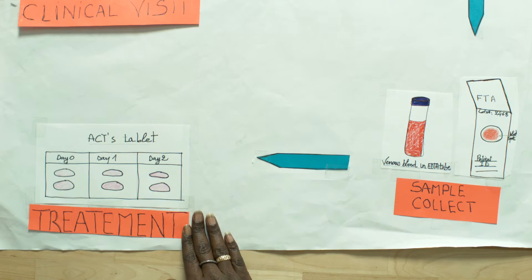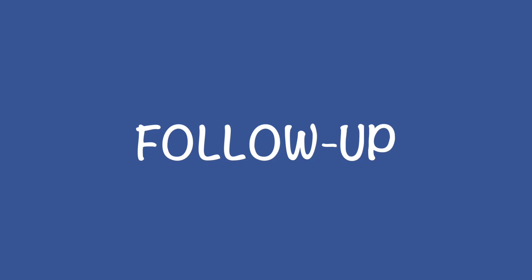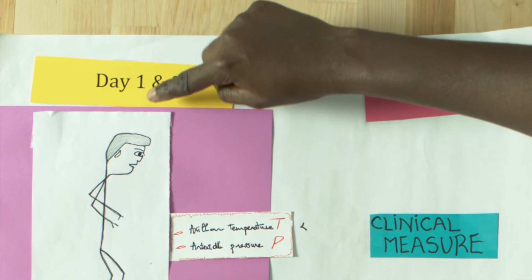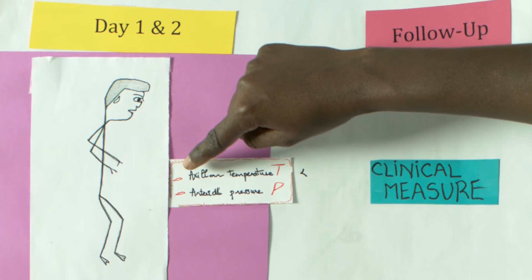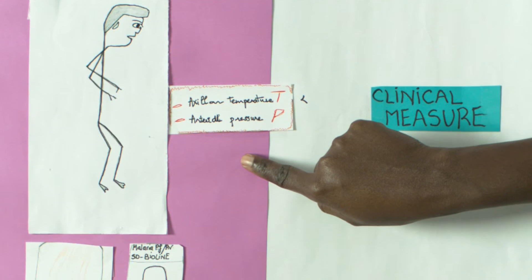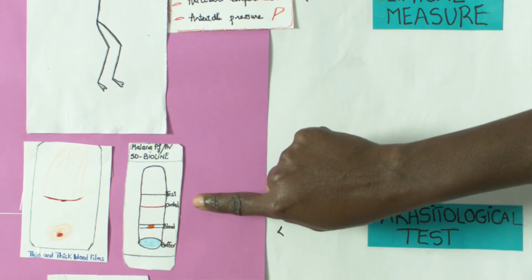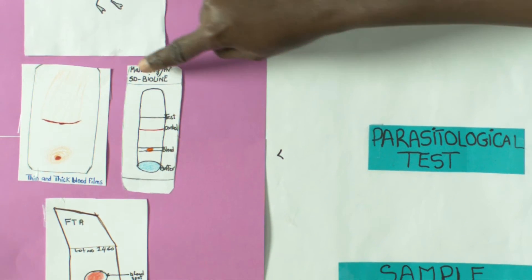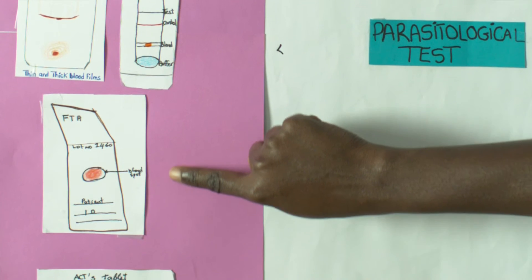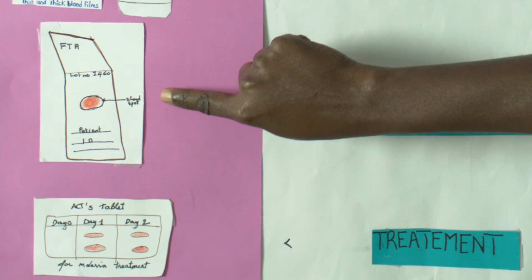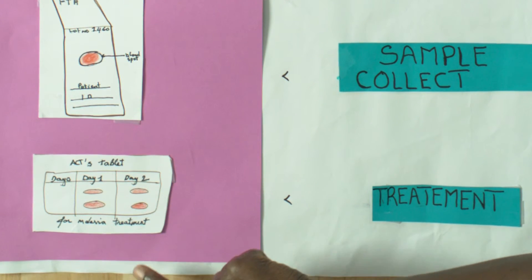If the patient agrees to participate in the study, we collect a filter paper for DNA extraction and draw blood for ex vivo testing. Then we begin treatment with ACT at day zero. At day one and two, when the patient comes to the clinical center, take temperature and blood pressure, perform parasitological tests — blood slide and RDT — then collect filter paper for DNA analysis and give the treatment.